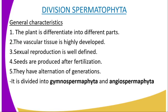Another characteristic is that they have alternation of generations, whereby the sporophyte is the dominant generation and the gametophyte is greatly reduced and enclosed within the sporophyte. The last characteristic is that they contain chlorophyll and are photosynthetic.